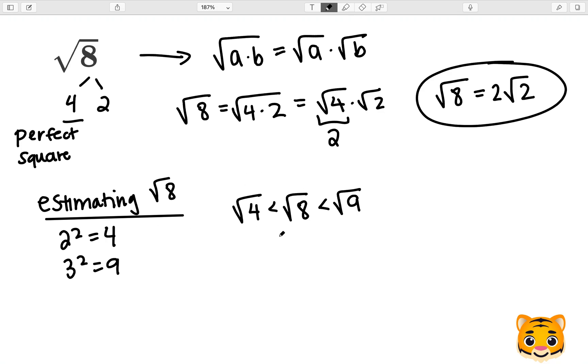Because 2 squared is 4, the square root of 4 will be 2. And because 3 squared is 9, the square root of 9 will be 3. Therefore, the square root of 8 lies between 2 and 3.